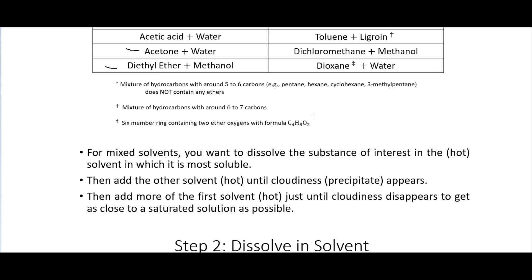For mixed solvents, dissolve your solute in the hot solvent in which it is most soluble. Then add the other solvent — the one it's less soluble in — until cloudiness, so a precipitate begins to appear. Then add just a little bit more of the first solvent back until the cloudiness disappears. Ideally we want as saturated a solution as possible so we don't need to cool way down before getting crystals, which would leave a lot of material still dissolved.